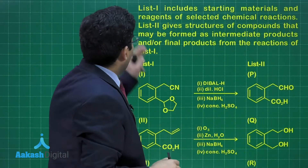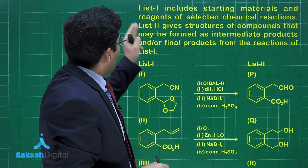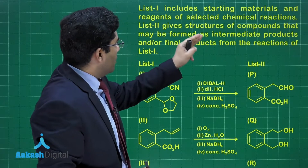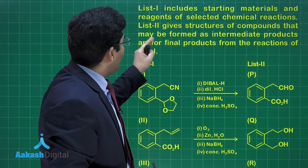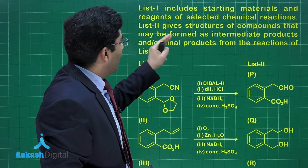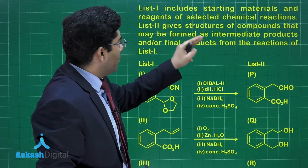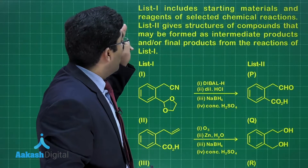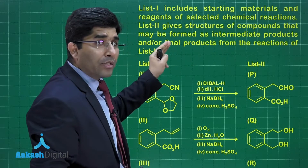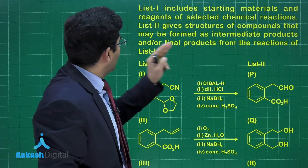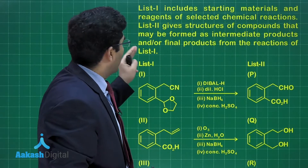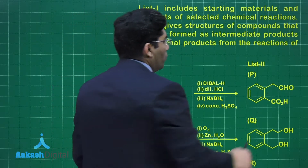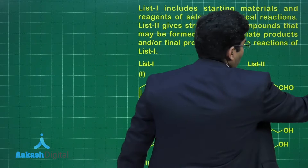List 2 gives the structures and the compounds that may be formed as the intermediate products and/or final products from the reactions in List 1. So let us move to the solution.